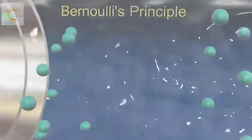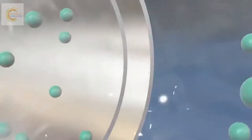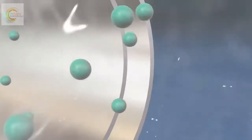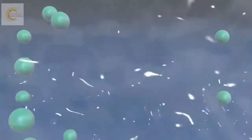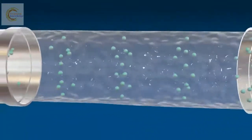Bernoulli's principle. The flow of a fluid is streamlined if every particle of the fluid flows exactly the path of its preceding particle and has the same velocity as that of its preceding particle.